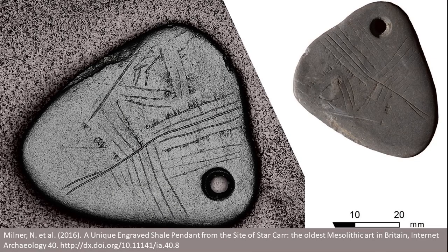This is an engraved pendant from the Mesolithic site of Starkar, depicting the earliest known Mesolithic art in Britain. RTI, as well as other imaging methods, made it possible to better identify not only the details of the engraving, but also the order in which the lines might have been made, thus allowing researchers to understand more deeply the making of the pendant, as well as to explore new meanings and interpretations.